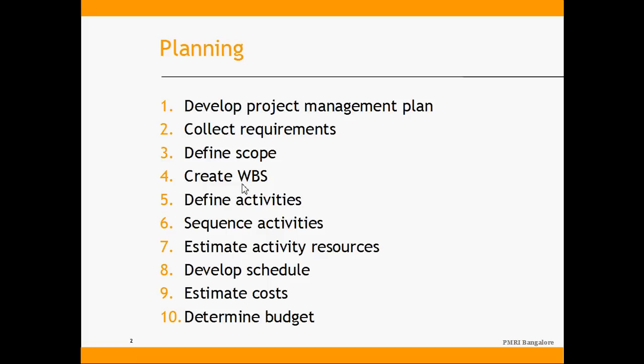Once the scope is defined, it gets decomposed further into a work breakdown structure, which we'll discuss in detail in subsequent modules. Once the WBS is done, those work packages are decomposed into activities. Once the activities are known, we sequence them based on their logical dependencies, estimate the resources required to execute them, develop the schedule, estimate the cost, and determine the budget. The aggregation of cost becomes the budget.